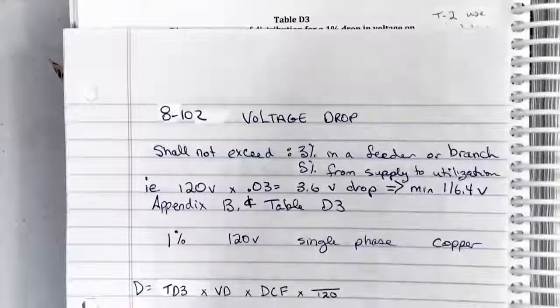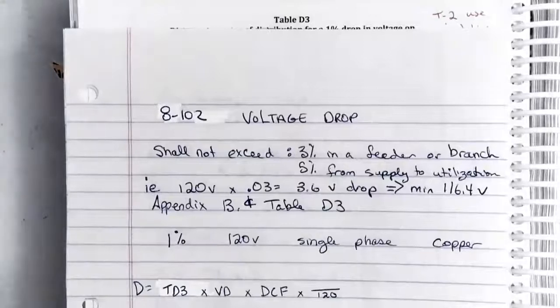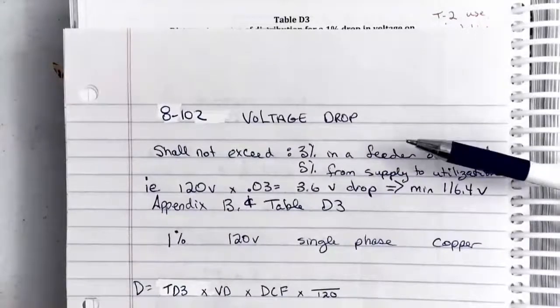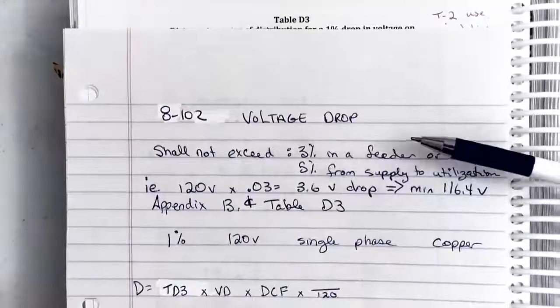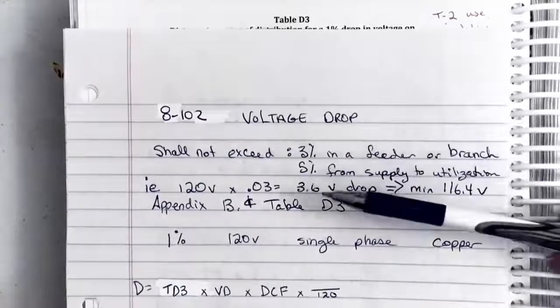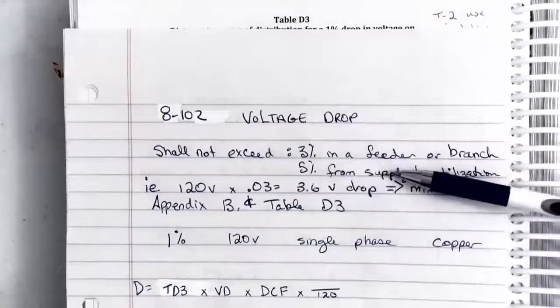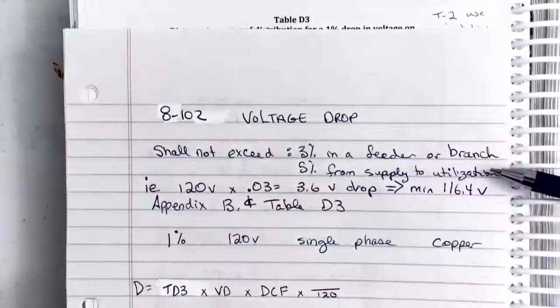Hey everybody, let's look at Rule 8102 in the Electrical Codebook for Canada. It's talking about the voltage drop in each circuit. 8102 tells us that we cannot exceed 3% voltage drop in a feeder or branch circuit, or overall we can't exceed 5% all the way from where the supply comes into the building out to the point of utilization, say out to a receptacle or load.